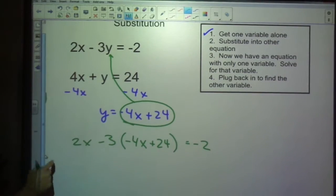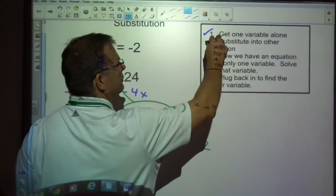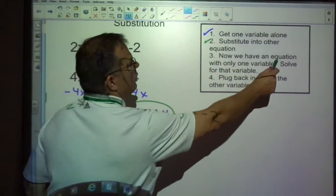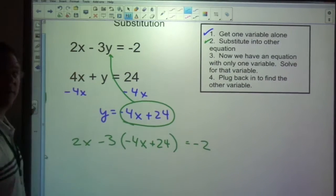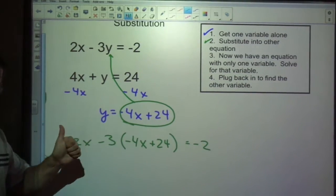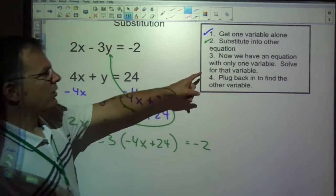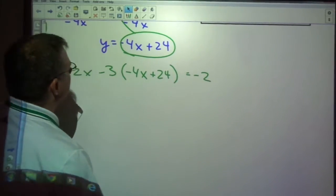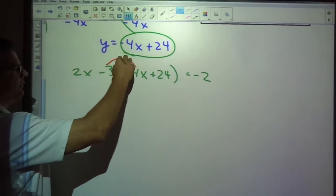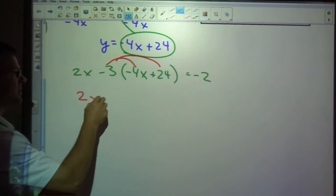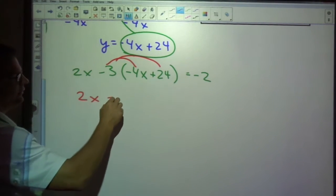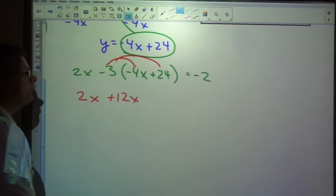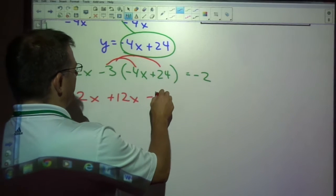So from here, that was step 2, substitute into other equation. Now we have an equation with only one variable. So you see x's, x's, x's. Now we're good to go, and I'm going to solve for that variable. So now I just need to figure out what x is. And so I'll take this negative 3, I'll distribute it. Negative 3 times negative 4 is positive 12. Negative 3 times 24 is negative 72.